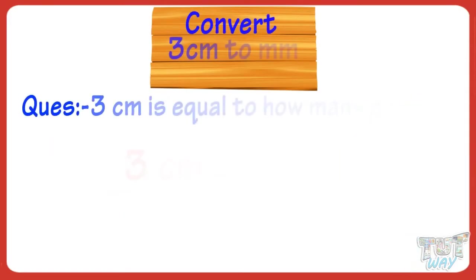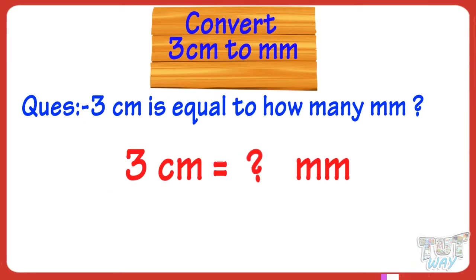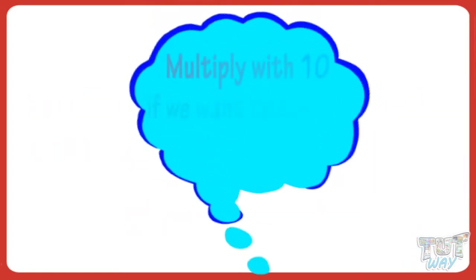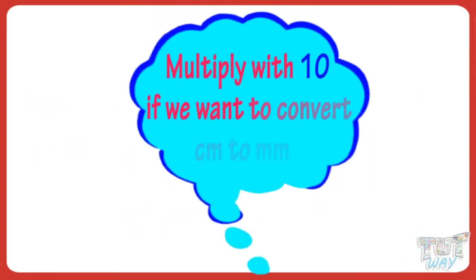Let's convert 3 centimeters to millimeters. 3 multiplied by 10, we get 30. So 3 centimeters equals 30 millimeters. So we multiply by 10 if we want to convert centimeters to millimeters.